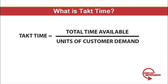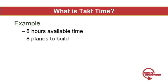So this is the formula for Takt time: it's the total time available for production divided by the total number of units the customer wants during that period of time. Let's work an example. You have 8 hours available in a day and a customer wants 8 planes in that day. I divide 8 hours by 8 planes and that gives me a Takt time of 1 hour. In other words, if I'm sitting at the end of the production line, I would have to see 1 plane coming off and completed every hour or we won't meet customer demand.